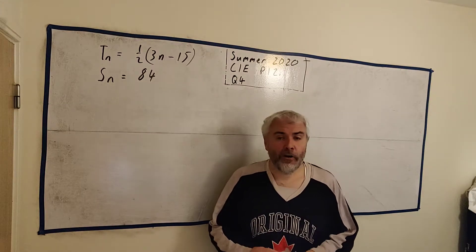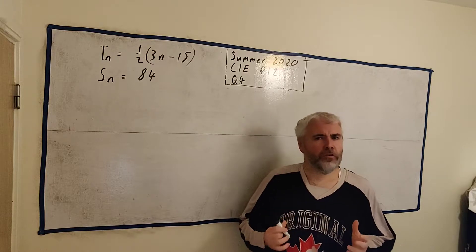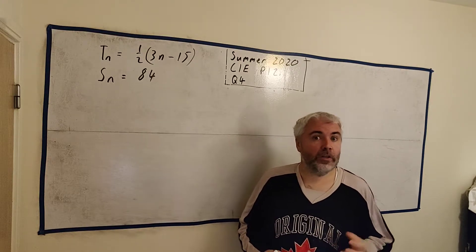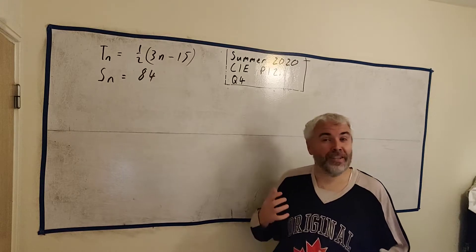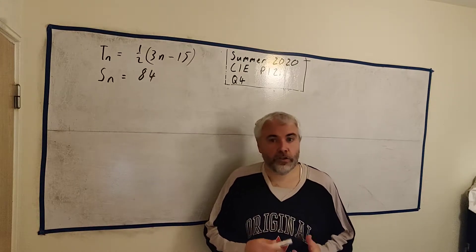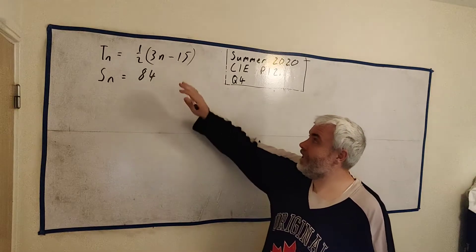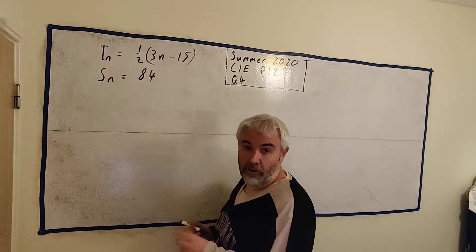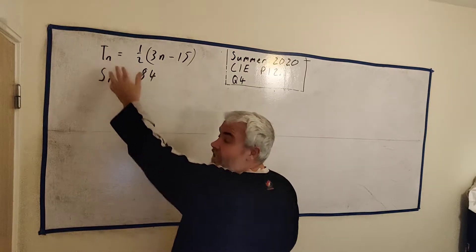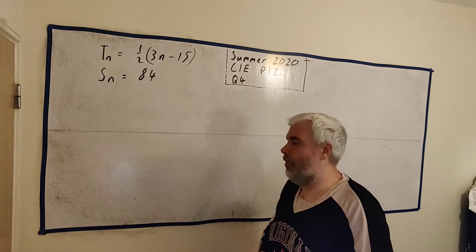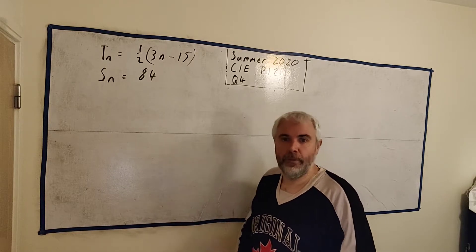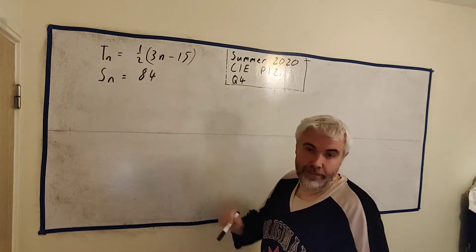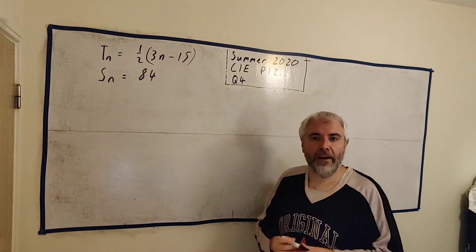This question is about an arithmetic progression and students find these quite easy when someone tells them what A equals and what D equals, or maybe even tells them the first few terms. But one thing I notice trips up a lot of students is when they give it to them like this. They said the nth term of an arithmetic progression, so I wrote Tn because that's the nth term. T1 is the first term, T2 is the second term, Tn is the nth term and they told us it equals this.